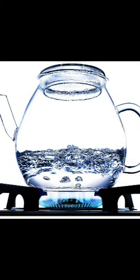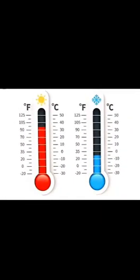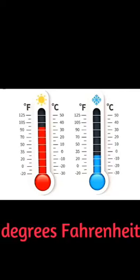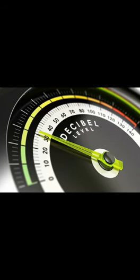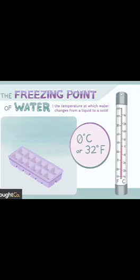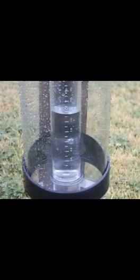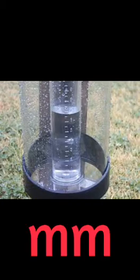First, the boiling point of water is 100 degrees Celsius. Next, the temperature of our body is generally measured in degrees Fahrenheit. Next, sound is measured in decibels. Next, the freezing point of water is zero degrees Celsius. Next, rainfall is measured in millimetres.